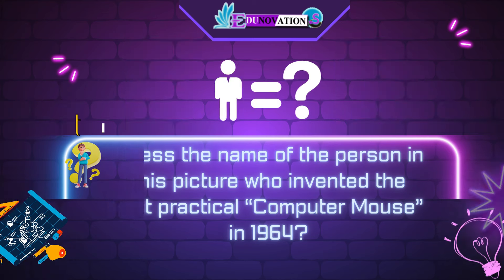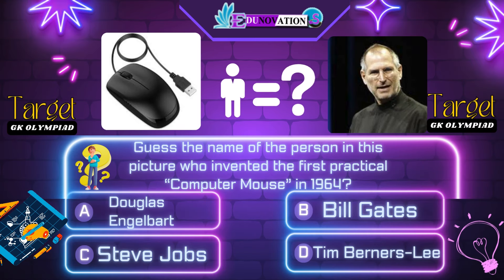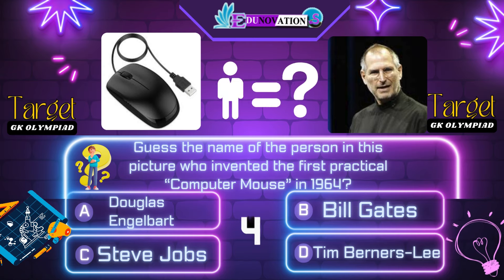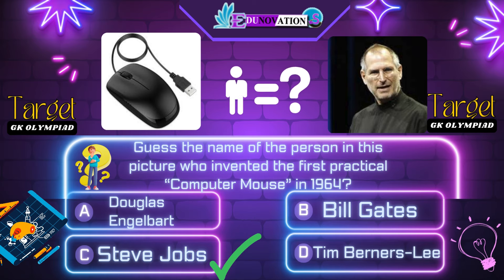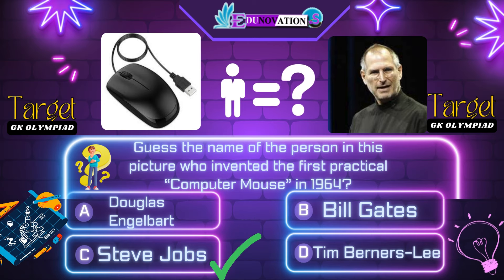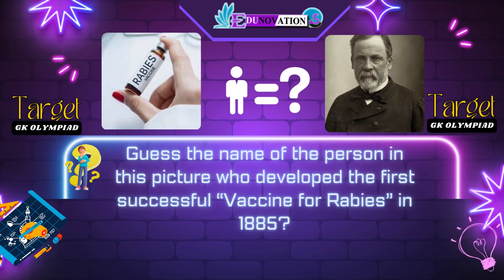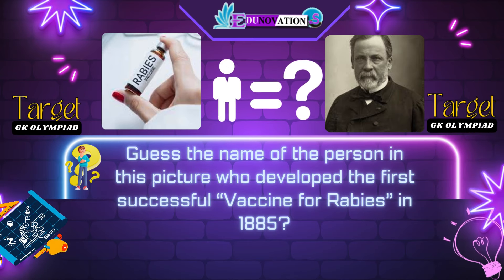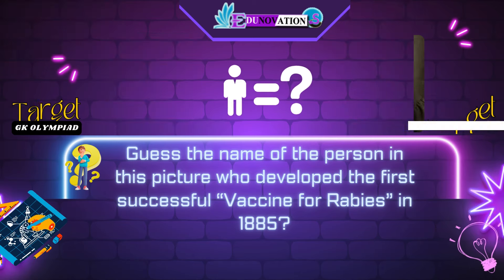Now next question. Guess the name of the person in this picture who invented the first practical computer mouse in 1964. Your options are: A. Douglas Engelbart, B. Bill Gates, C. Steve Jobs, D. Tim Berners-Lee. Time's up. Correct answer is C. Steve Jobs.